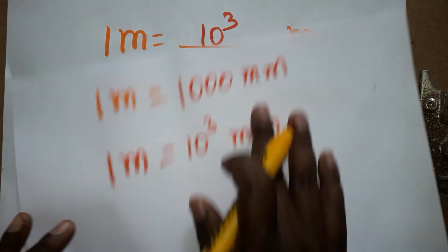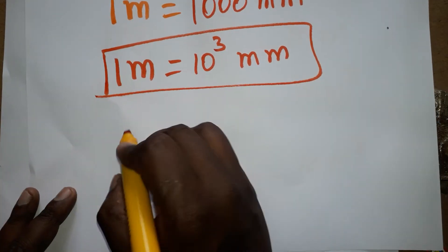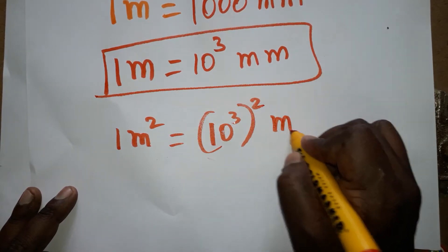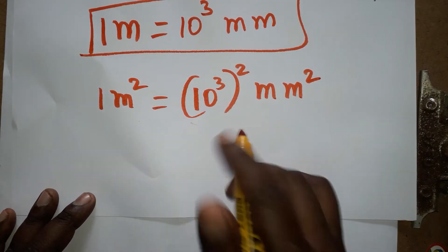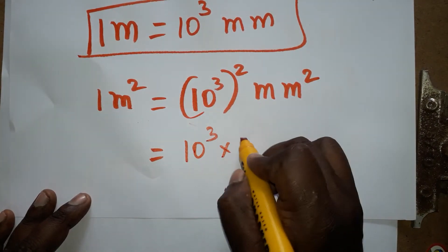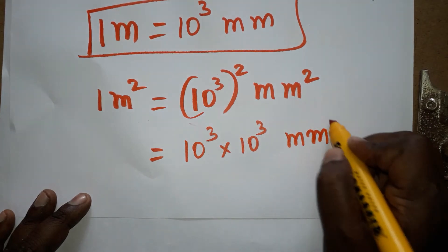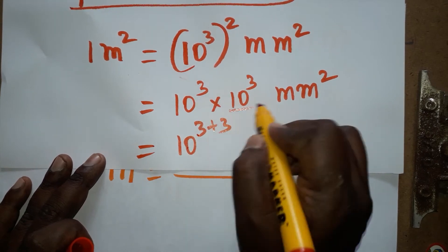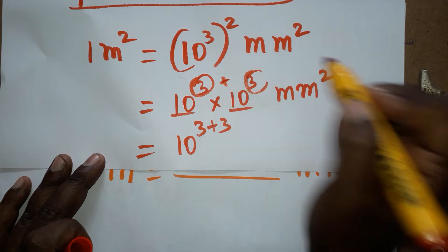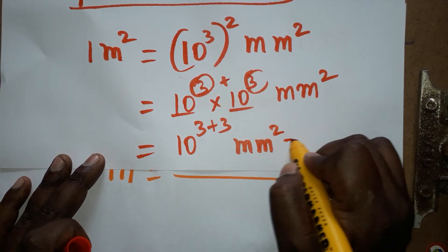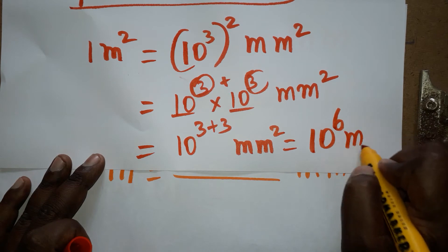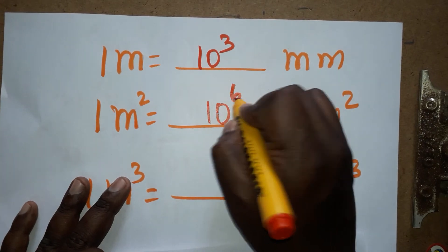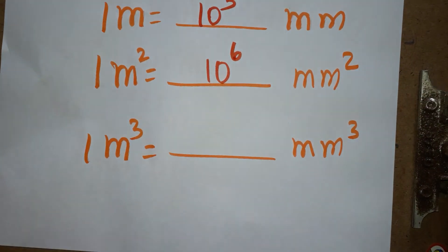Now, 1 meter square — just square the above equation. So 1 meter square equals (10 power 3) whole square millimeter square. This whole square means two times, so we write 10 power 3 into 10 power 3 millimeter square. Since the base is the same, we add the powers: 3 plus 3 equals 6. So 1 meter square is 10 power 6 millimeter square.